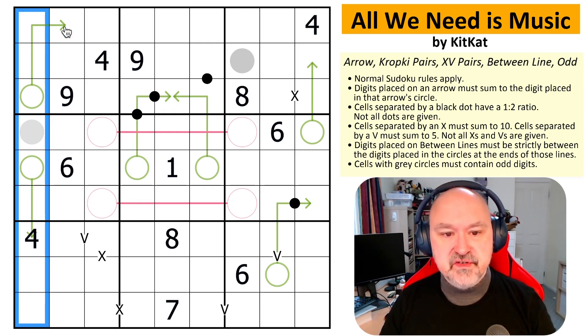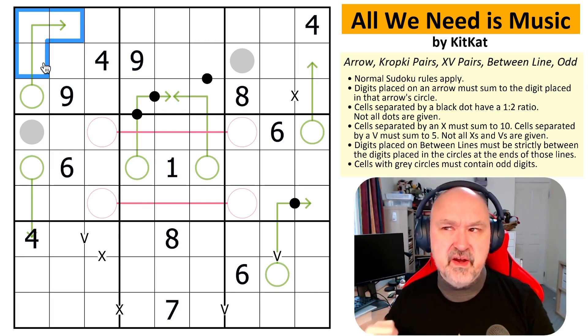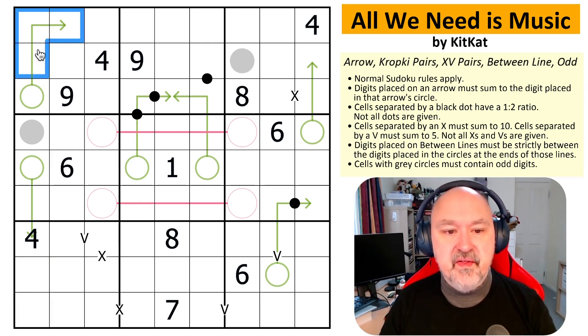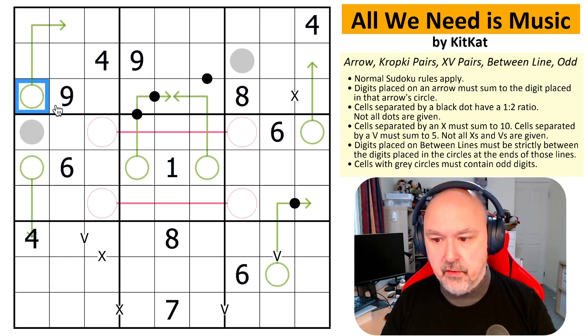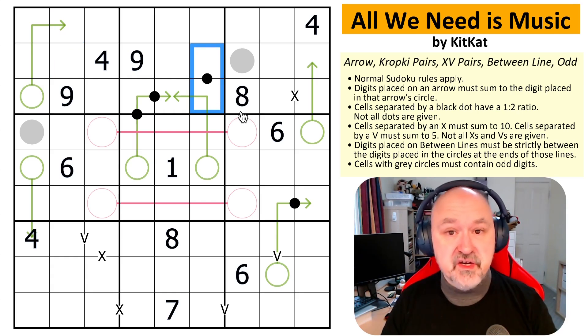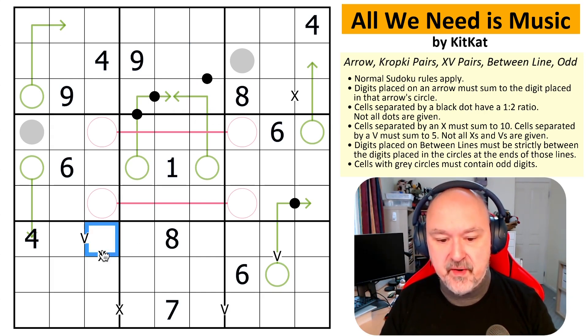We have arrows. Digits placed on the shaft of an arrow you sum them up and they must go into the circle that is attached to that arrow. Cells separated by black dots must be in a one-to-two ratio or one must be double the other. Not all dots are given, so that is ratio pairs. Cells separated by an X must sum to 10. Cells separated by a V must sum to 5. Not all Xs and Vs are given, so XV pairs.